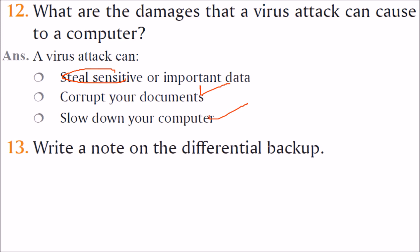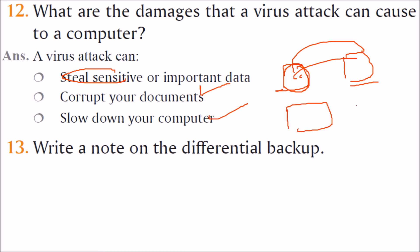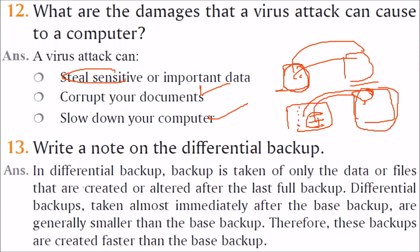Write a note on differential backup. There are two types: full backup, where every time you back up the full amount of data from one machine to another or to a storage device; and differential backup, where you only back up those files which have been modified. The differential backup is taken of only the data or files created or altered after the last full backup.